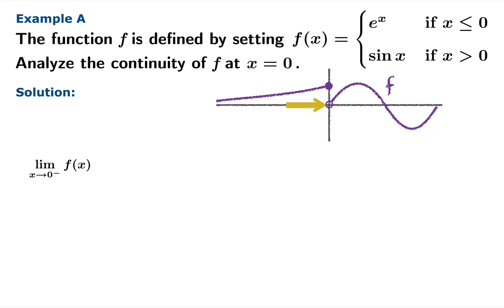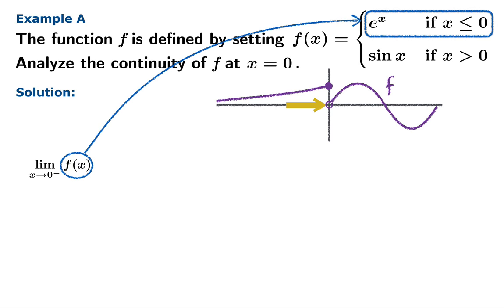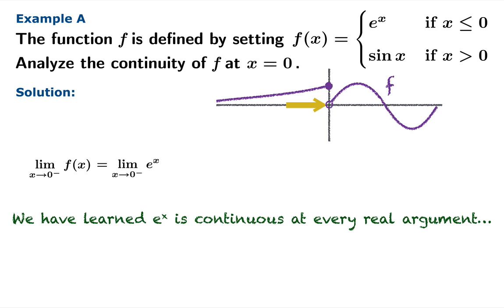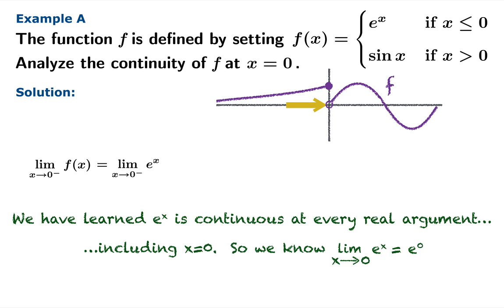First let's analyze the limiting value of f of x as x approaches zero from the left. Since we're using arguments to the left of the origin, we substitute e to the x into our formula, so we're really looking at the limit as x approaches zero from the left of e to the x. We know e to the x is continuous at every real argument including zero, so this limit equals e to the zero, which is one.